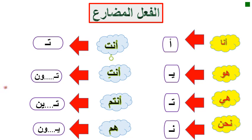If you'd like, you don't have to say أنا all the time — you can use a shorter form 'أ' instead of أنا. Also, you don't have to say هو all the time — you can use 'يا' instead of هو. And you don't have to say هي all the time — you may use 'تا' instead of هي.